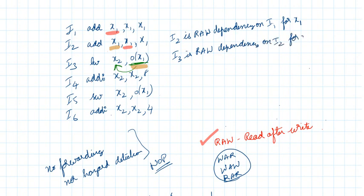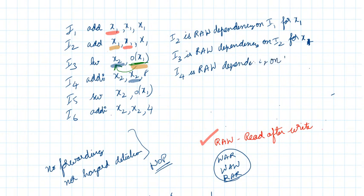Now look at the fourth instruction — we are reading x2 after writing x2 in the third instruction. So I4 is a read-after-write dependency on I3 for register x2. The fifth instruction reads x2 and puts the result into memory location 0x1, so we are reading x2 after writing x2 in the fourth instruction.